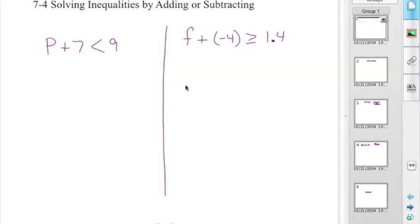As you'll see from the first example here, P plus 7 is less than 9. We solve by subtracting 7 from both sides. Because you're such advanced math students, what happens to the 7s on the left? They cancel each other out. P is less than 2.